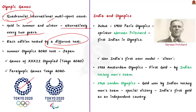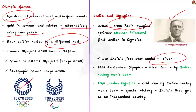India made its debut in the Olympics during the 1900 Paris Olympics. A sprinter named Norman Pritchard became the first Indian to participate, competing in five athletic events and winning India's first ever medal — a silver. India won its first gold at the 1928 Amsterdam Olympics, won by the Indian men's hockey team. However, these were victories of British India, not independent India. The landmark moment came at the 1948 London Olympics, when the Indian hockey team won its first gold as independent India.